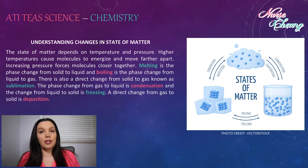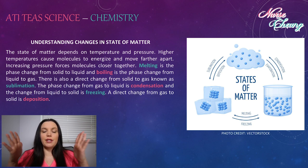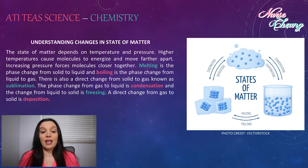The state of matter depends on temperature and pressure. Higher temperatures cause molecules to become energized and move apart. Increasing pressure forces molecules closer together. Melting is the phase change between solid and liquid and boiling is the phase change between liquid to gas. There is also a direct change from solid to gas known as sublimation. The phase change from gas to liquid is called condensation and the change from liquid to solid is called freezing. A direct change from gas to solid is called deposition.